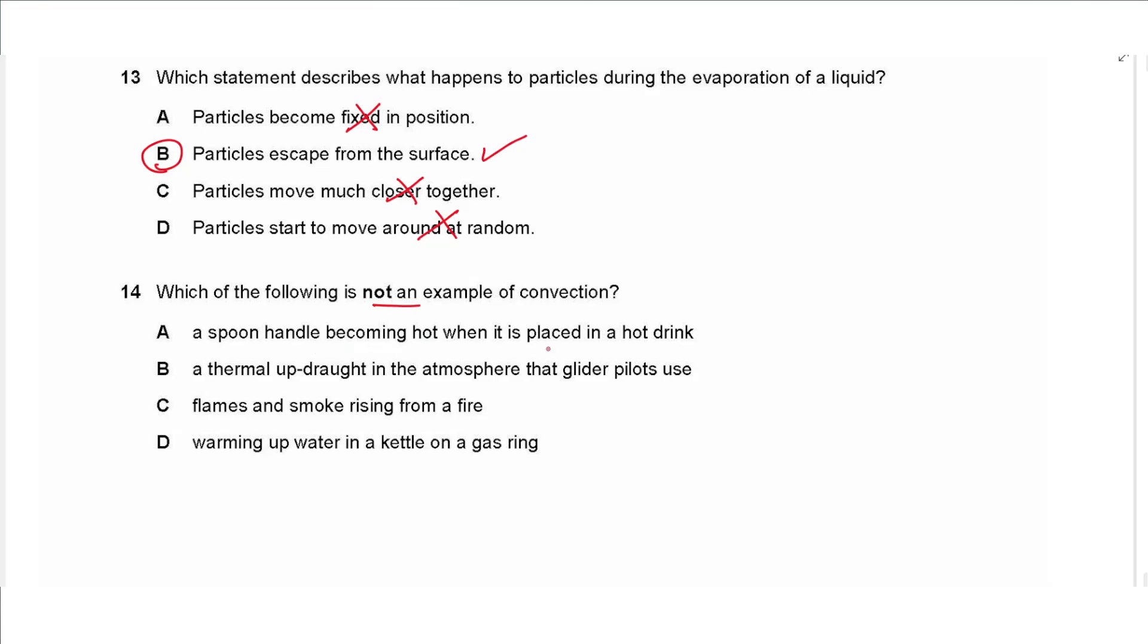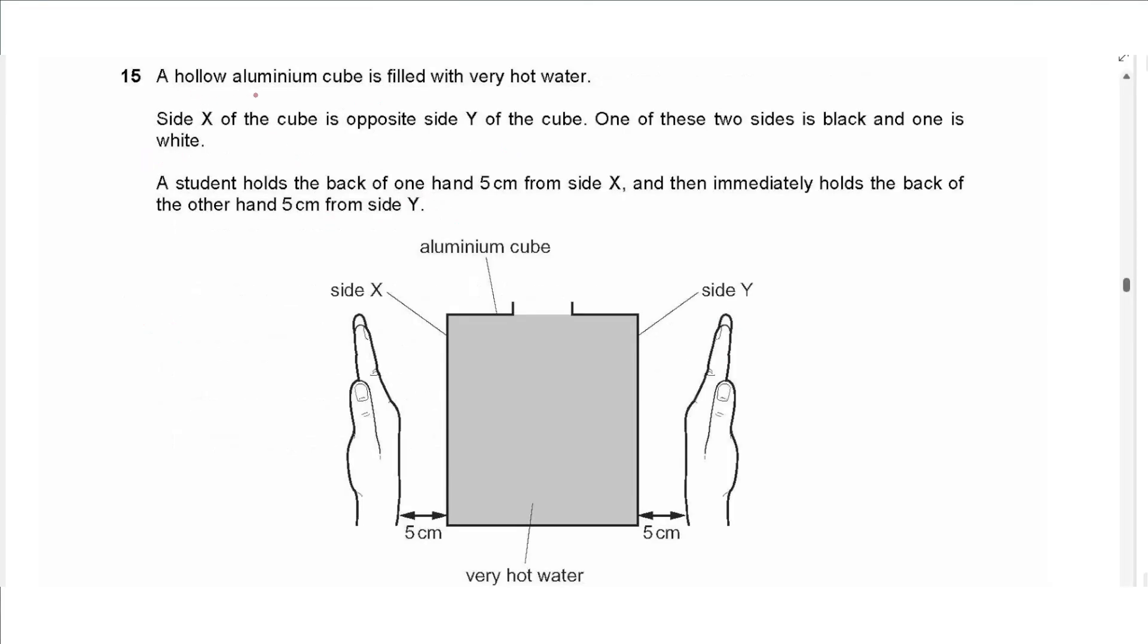Question 14 says which of the following is not an example of convection. A spoon handle becomes hot when it is placed in a hot drink, that's not convection because it's a solid object and convection only happens in liquids and gases. Thermal updraft in atmosphere that glider pilots use, so an updraft due to a heat is a convection current. Flames and smoke rising from a fire, rising because hot gases and liquids rise. So in this case gas warming up water in a kettle on a gas ring, because the heated air flows upwards. So all these are convection currents from B to D, so the one without convection is A.